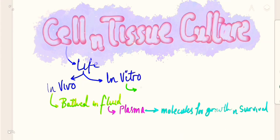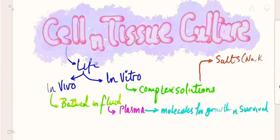The in vitro life of the cells, for this matter, instead of the plasma or the actual fluids, some complex solutions would be prepared and the cells would be placed inside these complex solutions, which will have the necessary salts like sodium, potassium, calcium and things like that, the necessary amino acids for their growth and function, and also will have serum.